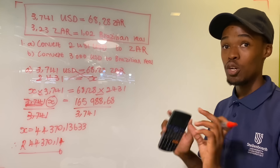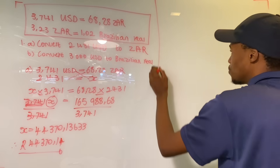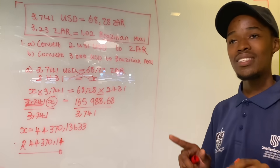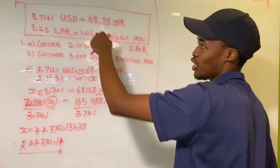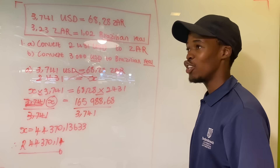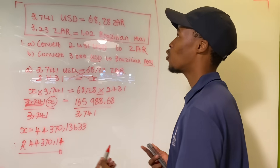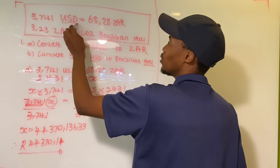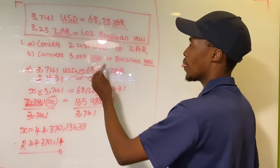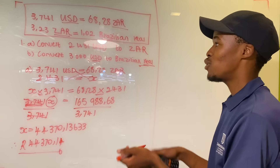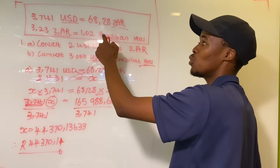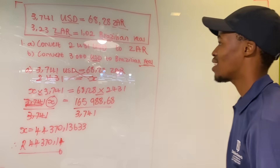This is how we work with conversions. Now we go to the next question, which is a bit more complicated. They say convert 3000 US dollars to Brazilian real. The confusing part is that you haven't been told how many US dollars equals how many Brazilian reals. You've only been shown how to convert from USD to South African rands, and from South African rands to Brazilian real. So you have to do it in two steps: first convert USD to rands, then convert rands to Brazilian real.